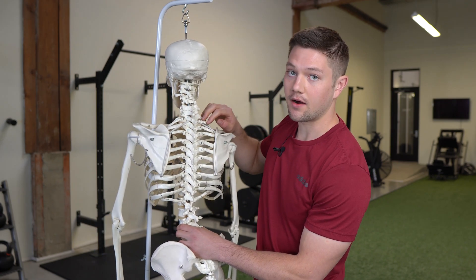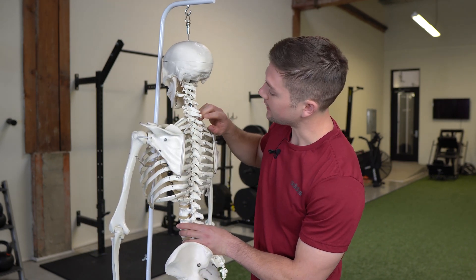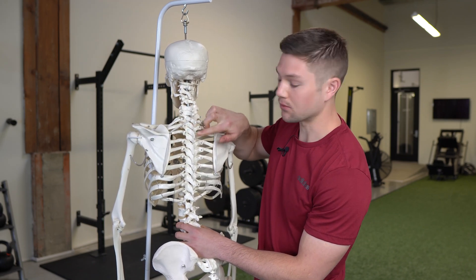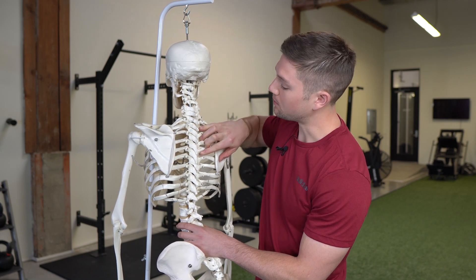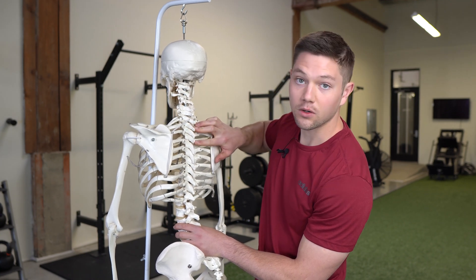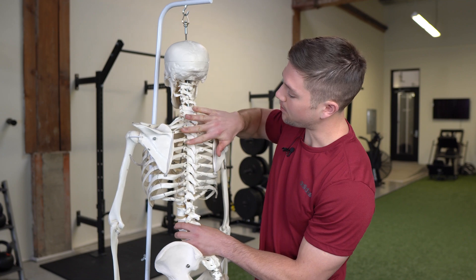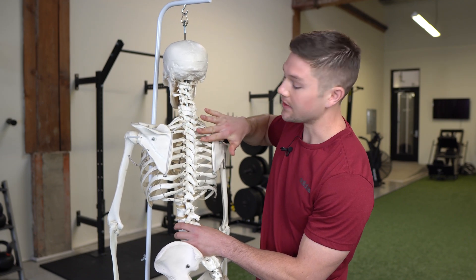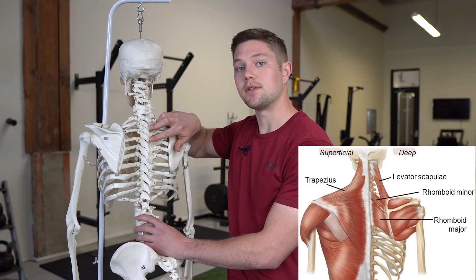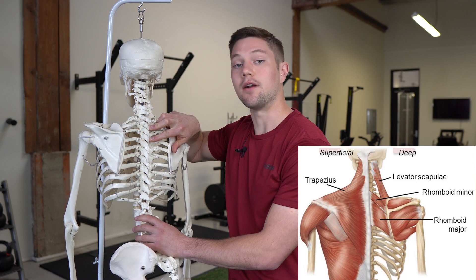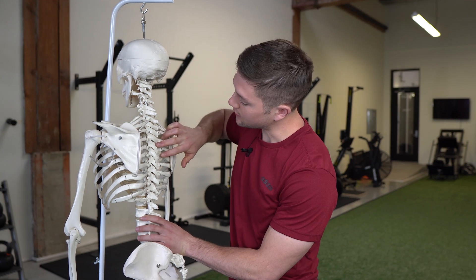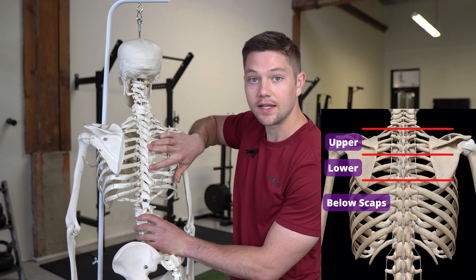Let's break down where these vertebrae are. T1 doesn't have a lot of movement relative to the rest of the thoracic vertebrae, so we'll start the first chamber at T2 through T4, which runs along the upper border of the scapula. This region is going to involve primarily the upper traps, the upper parts of the rhomboids, and the levator scapulae.